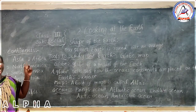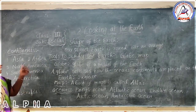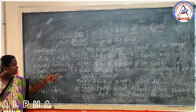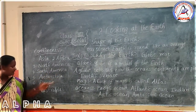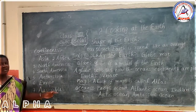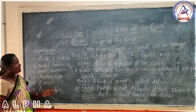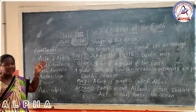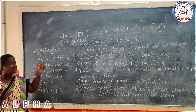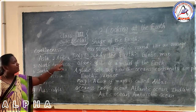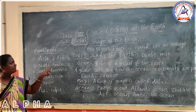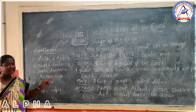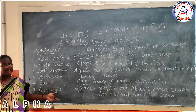What are the continents we observe on the world map? Asia, Africa, North America, South America, Antarctica, Europe, and Australia. These are the seven continents we observe on the world map and on the earth.